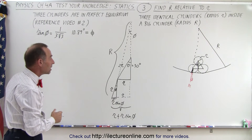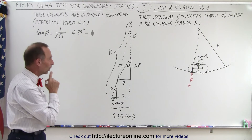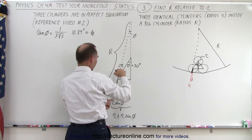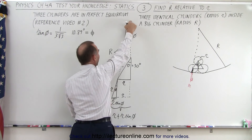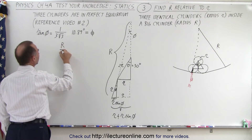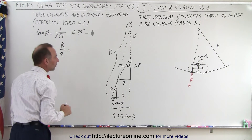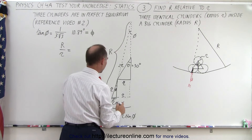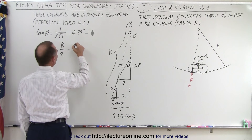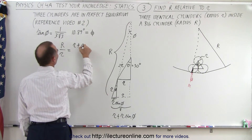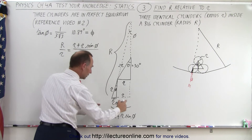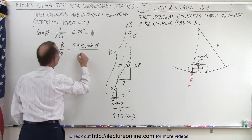They must be — not equal but — similar to one another, with the same ratios. So I can say that big R relative to small r is equal to the hypotenuse of the big triangle relative to the hypotenuse of the small triangle. That is: big R relative to small r equals r plus r times sine of phi, divided by r times sine of phi.